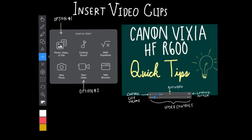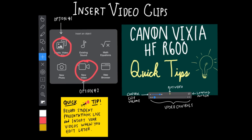To insert a video clip you have two options: you can insert a video on file or you can create a new video. If you insert a new video it will prompt you to record a clip using the iPad camera, which will then automatically be inserted onto your slide. Your inserted video or audio clip will not automatically start playing when you arrive at that slide — you will need to start recording on that slide first, then press the play button on the specific video or audio wave to activate your clip.